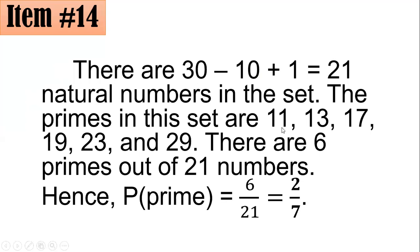The primes in this set are 11, 13, 17, 19, 23, and 29. Remember that prime numbers are natural numbers that have exactly two distinct positive factors. One and itself. And these are the six primes. And since there are six out of 21 numbers in that set, then the probability of picking a prime number is 6 over 21, but dividing both by their GCF, which is 3, you get two sevenths. Letter A.